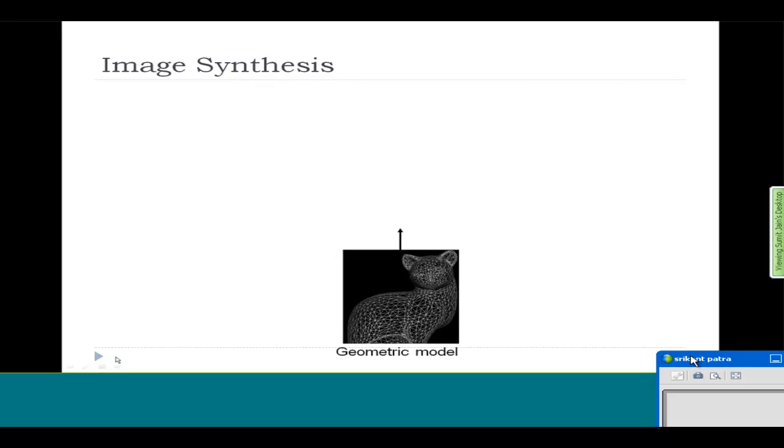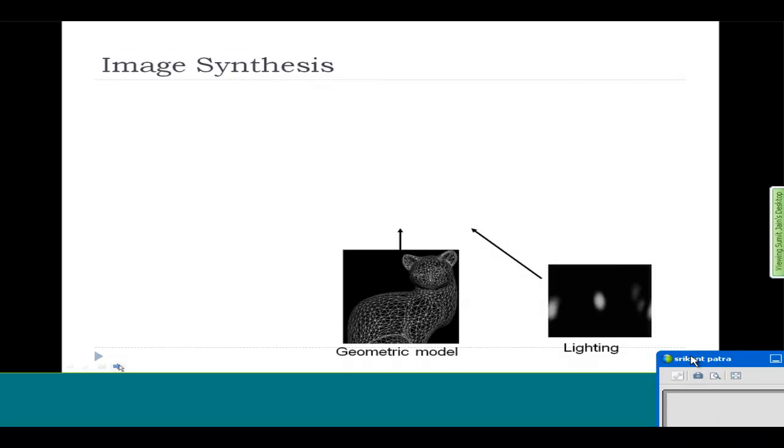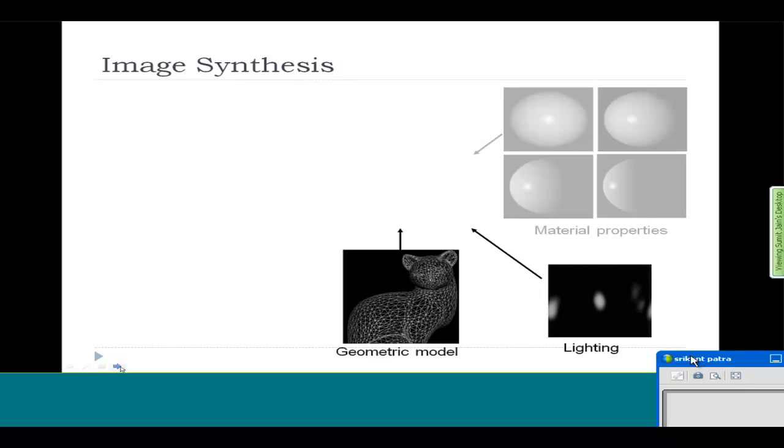To formalize it differently, what you have is a geometric model, which means that there is some mathematical model that we use to define the geometry of the object. For example, if you have a cricket ball, you will have a sphere defining the geometry of that ball. And then you have the lighting in the scene, which is let's say the sun or the outside lighting.